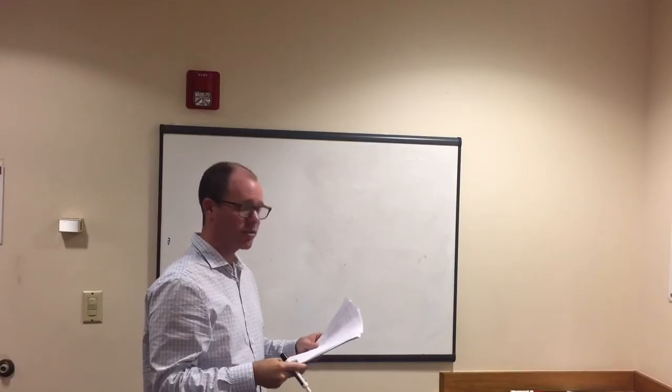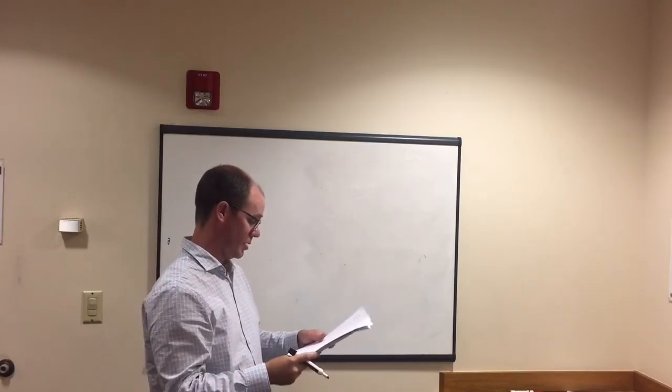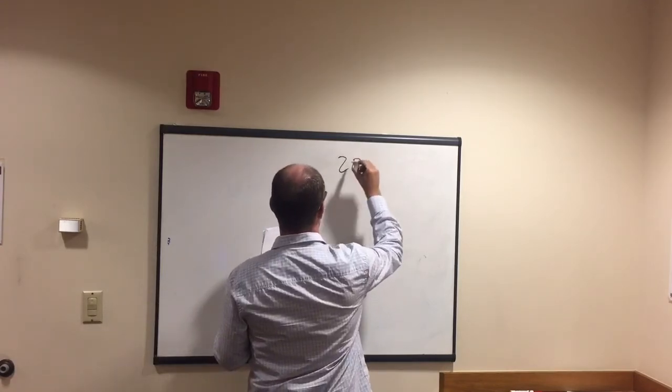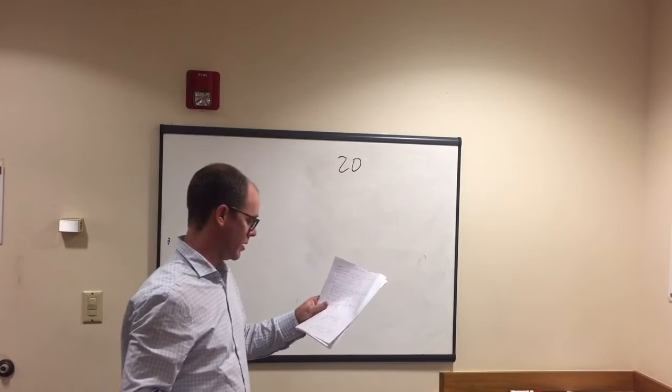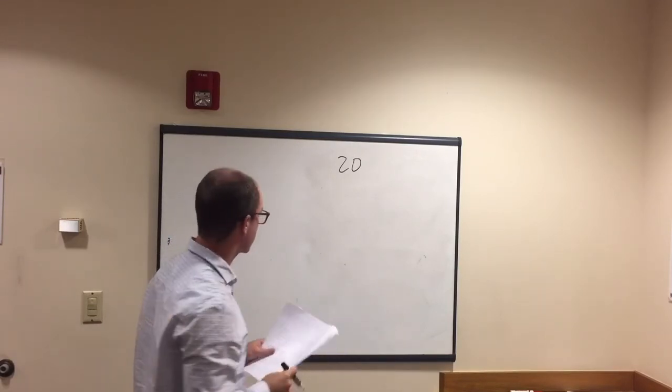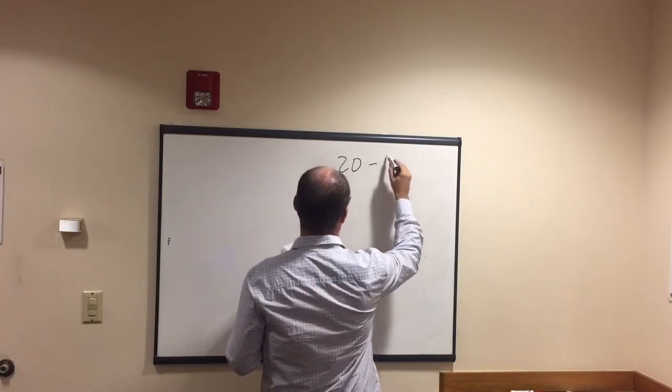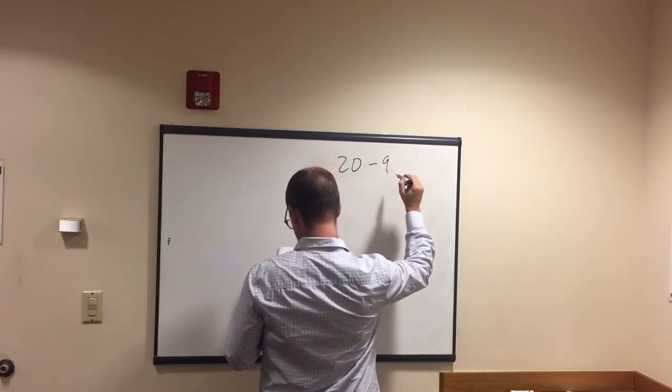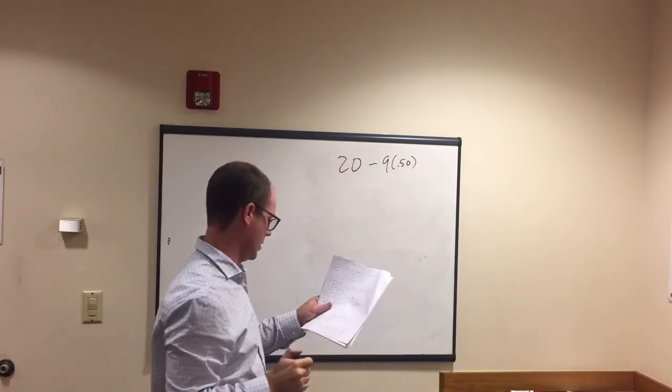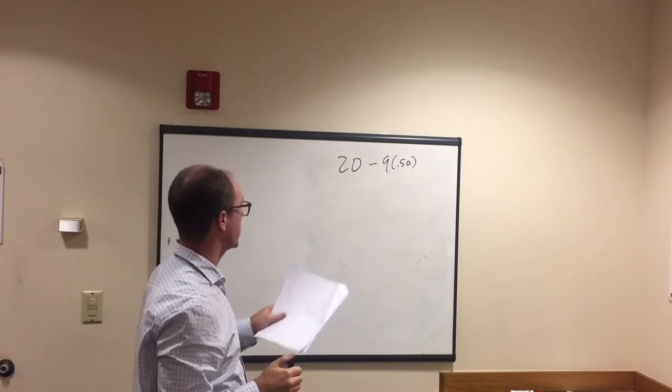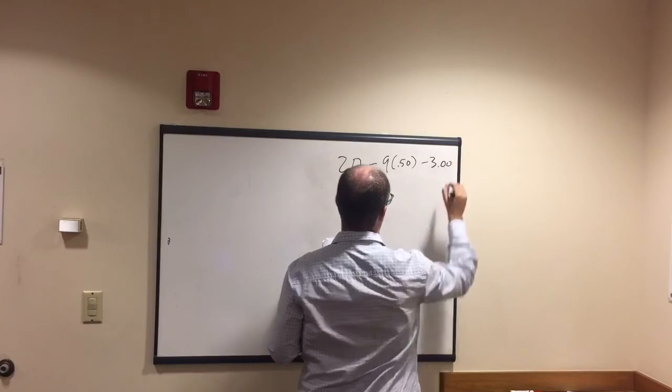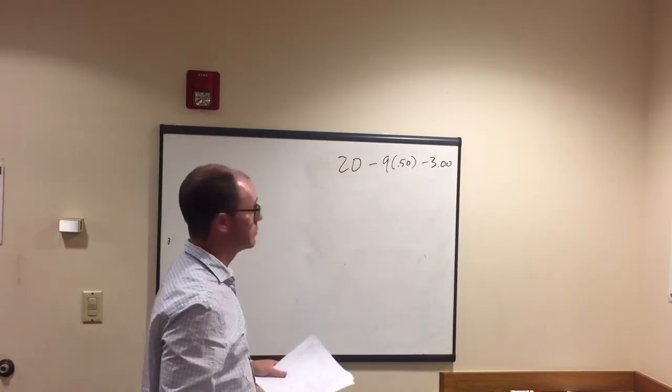Then we have this, it's like a raffle ticket question. This is our last one. So it says we start with $20. We buy 9 raffle tickets for 50 cents each. We also buy cotton candy for $3. How much is left?